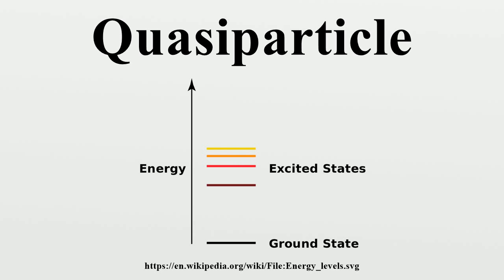A plasmon is a collective excitation which is the quantum of plasma oscillations. A polaron is a quasi-particle which comes about when an electron interacts with the polarization of its surrounding ions. An exciton is an electron and hole bound together. A plasmaritone is a coupled optical phonon and dressed photon consisting of a plasmon and photon.